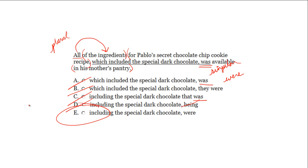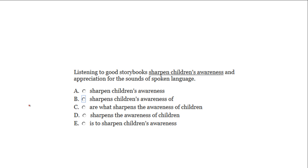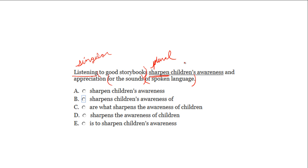Next example: 'Listening to good storybooks sharpen children's awareness and appreciation for the sounds of spoken language.' Let's put prepositional phrases in parentheses: 'to good storybooks,' 'for sounds of spoken language.' The subject outside these phrases is 'listening.' Listening is singular. The verb is 'sharpen.' Testing: Glenn sharpens his pencil — singular; Glenn and Jen sharpen their pencil — 'sharpen' is plural. The subject and verb do not agree; we need to change 'sharpen' to 'sharpens.'